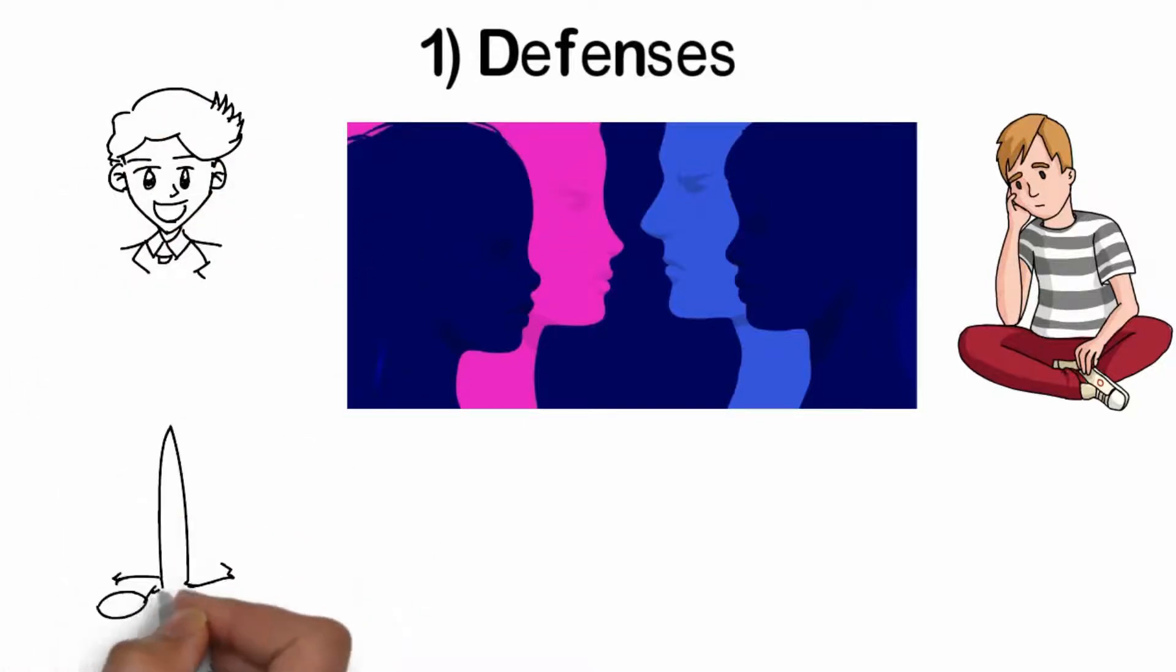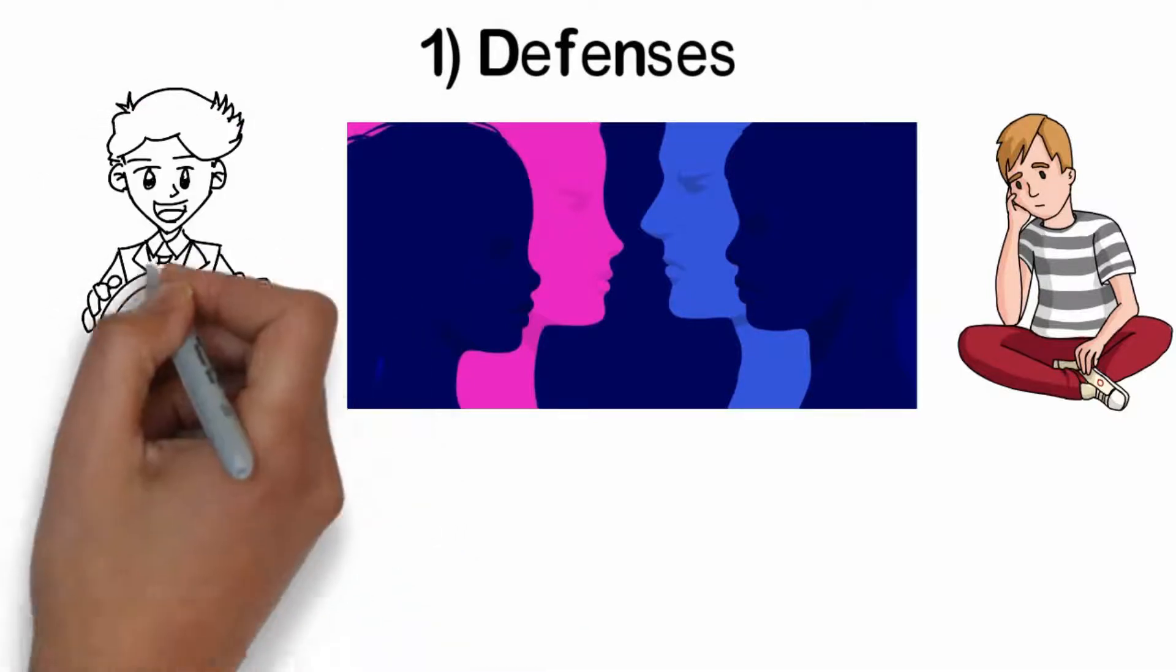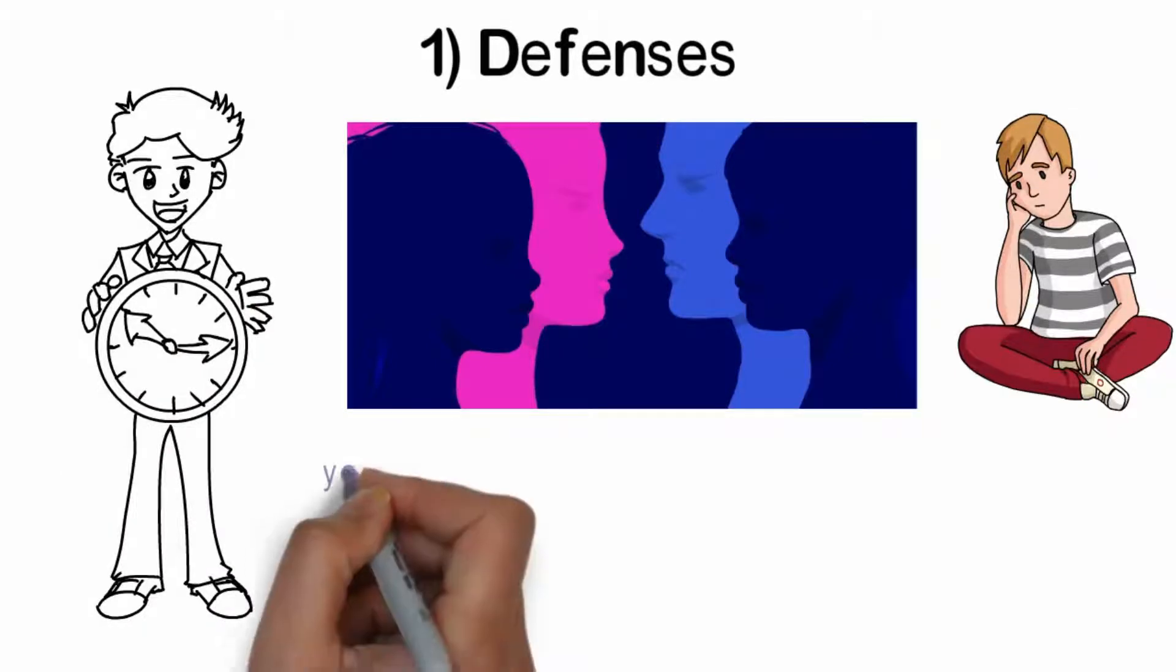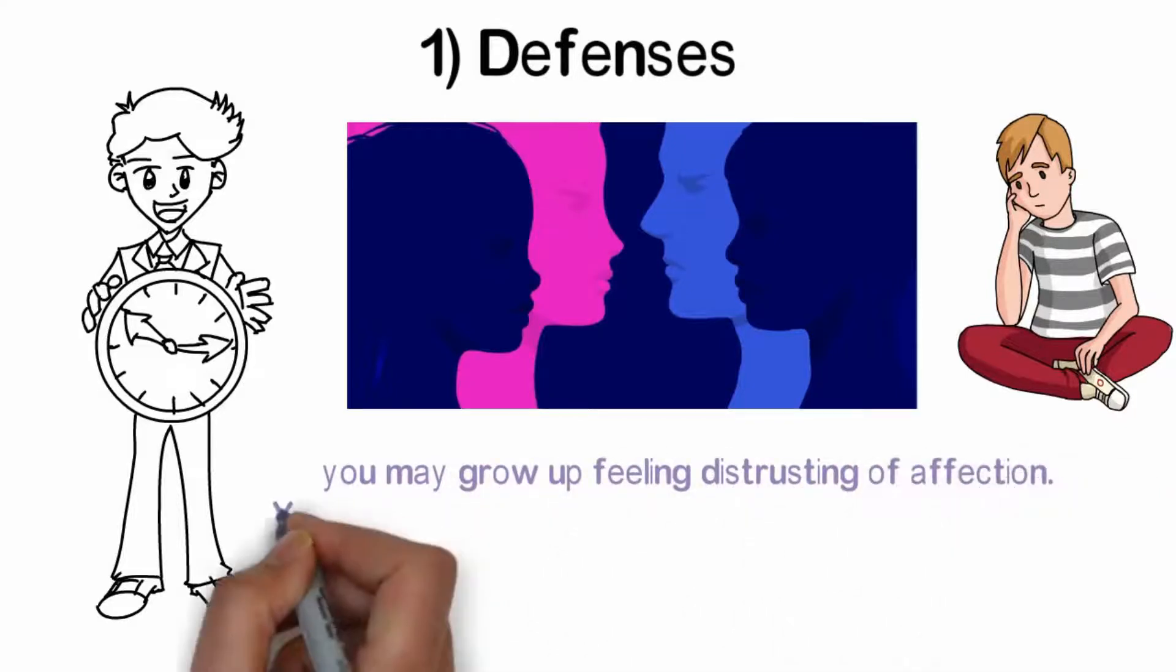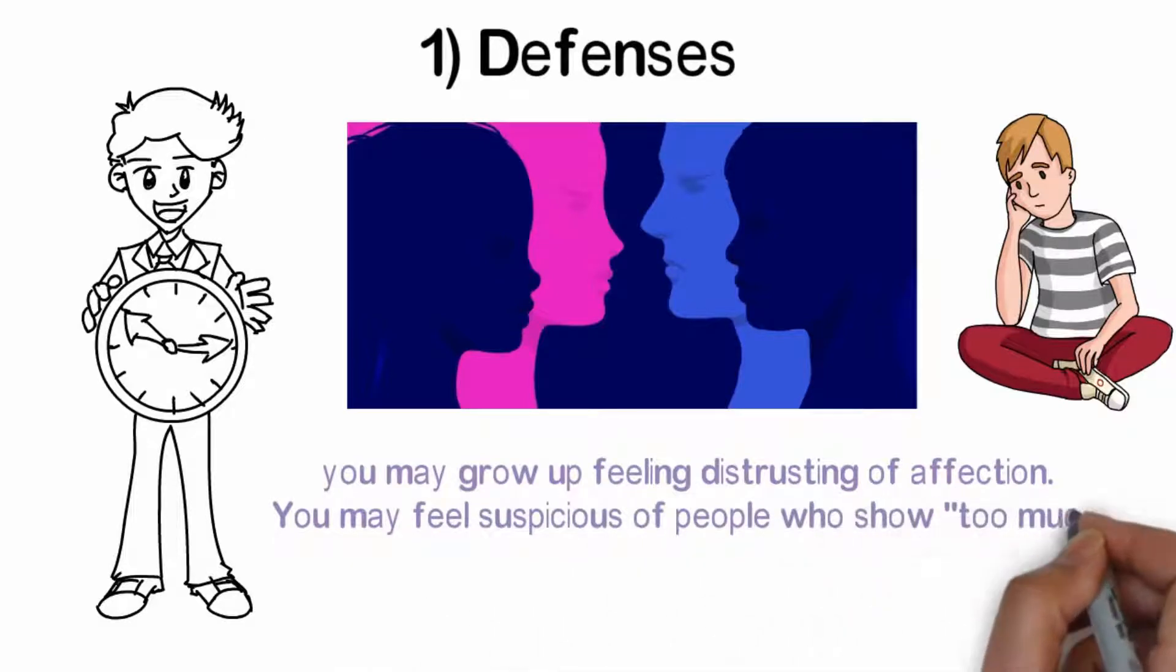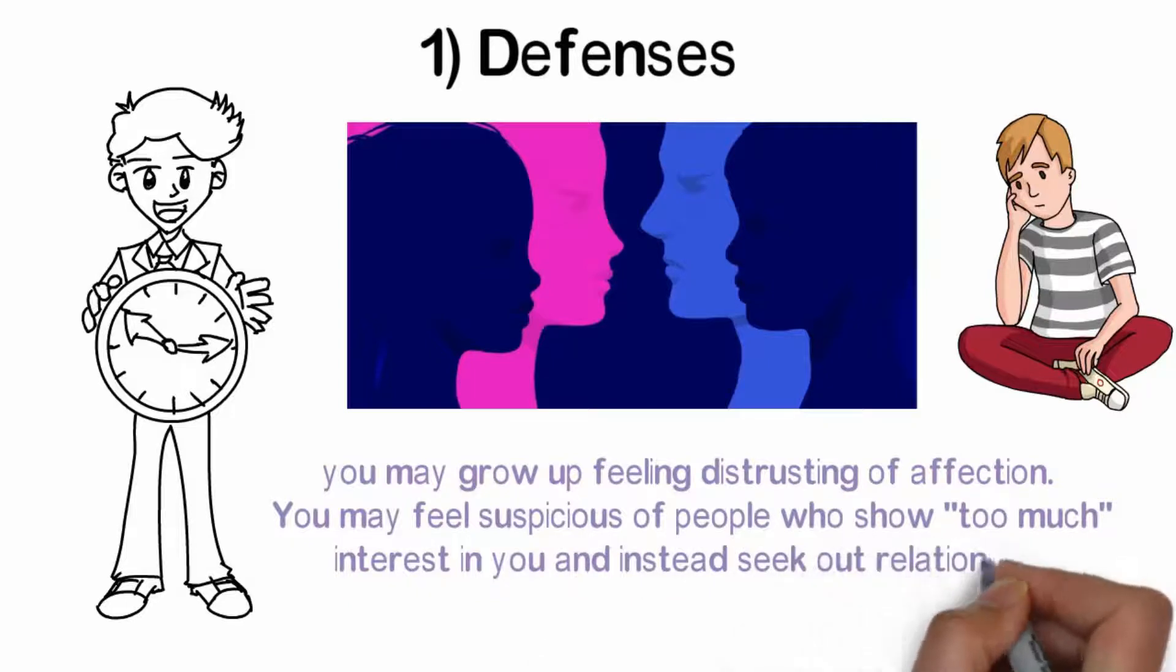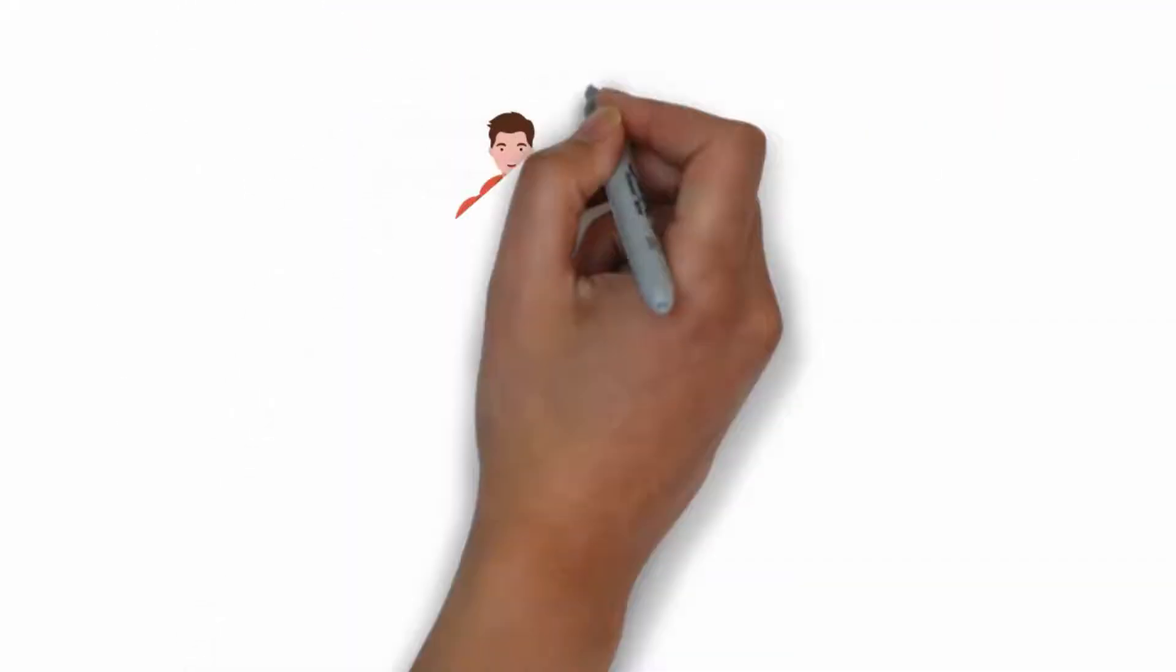In our adult relationships, we may resist being too vulnerable or write people off too easily. If, for example, you were raised by parents or caretakers who were negligent or cold, you may grow up feeling distrusting of affection. You may feel suspicious of people who show too much interest in you and instead seek out relationships that recreate dynamics from your past. You may then choose a partner who is aloof or distant.